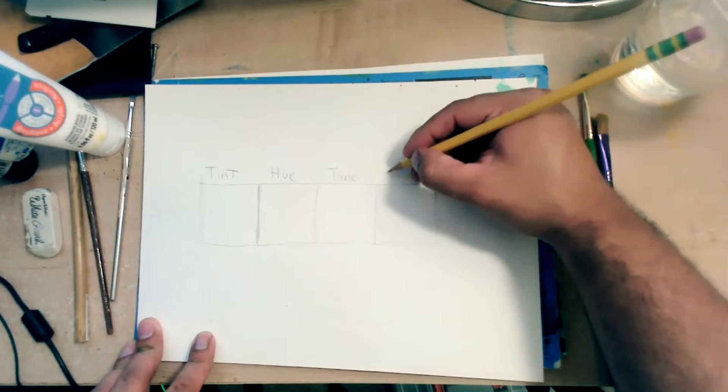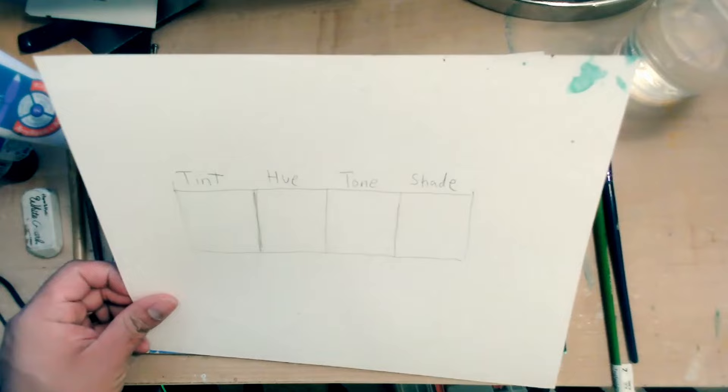That is going to be the darkest one. So the lightest one is going to be tint, hue, tone, shade.